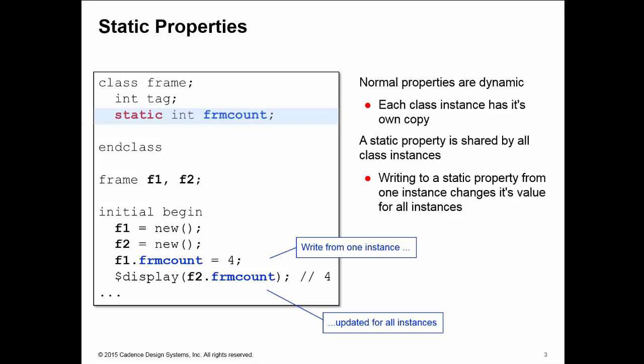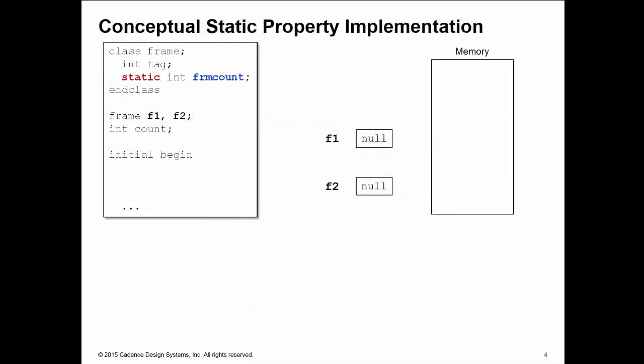So let's try and understand how this works. Conceptually what happens is your compiler identifies the static properties of your classes and pre-allocates them in memory at elaboration. So they're not created dynamically.